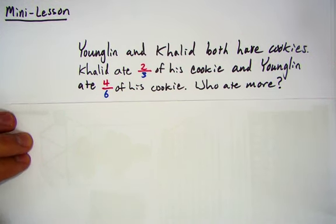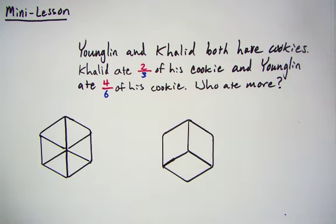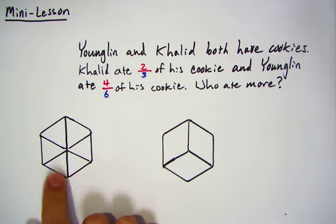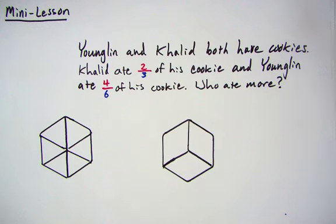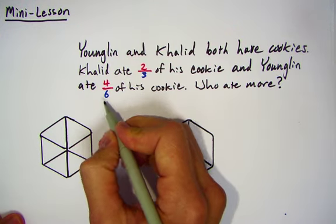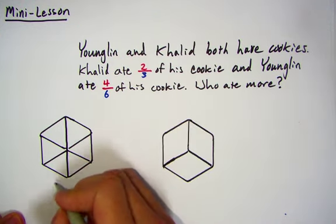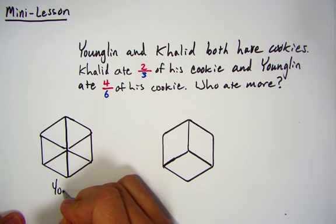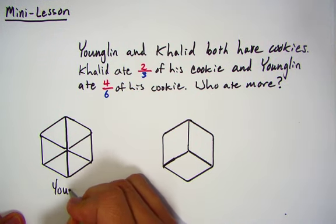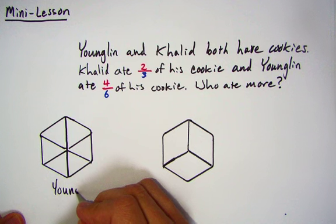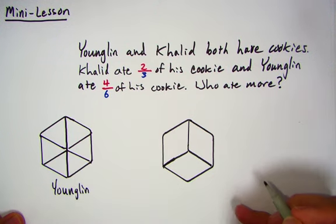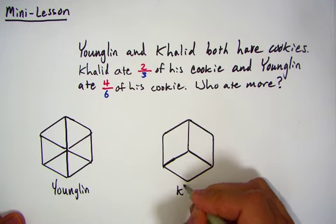I've already drawn the cookies and divided them into their equal parts. You can see that this one is Young Lin's cookie because he ate four-sixths of his cookie, and this cookie is split up into six equal parts. This one's Khaled's.